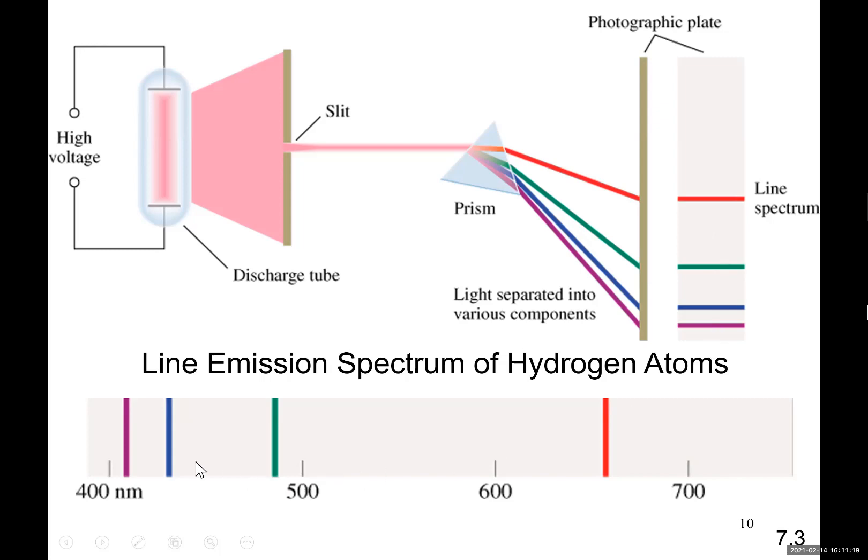They ended up with these four visible lines in hydrogen gas, and they measured the wavelengths of these lines. You see the wavelengths are here in nanometers. What was interesting was the fact that these lines are like fingerprints of hydrogen. If you see this line spectrum, you know you're dealing with hydrogen.